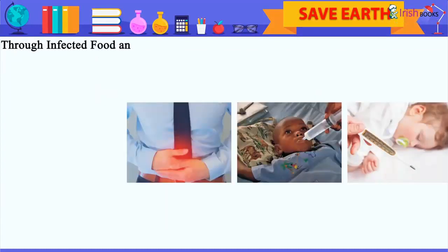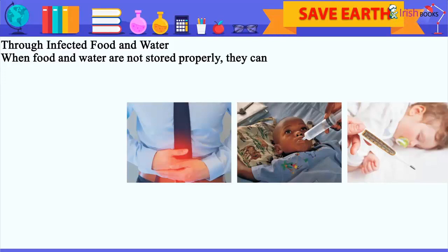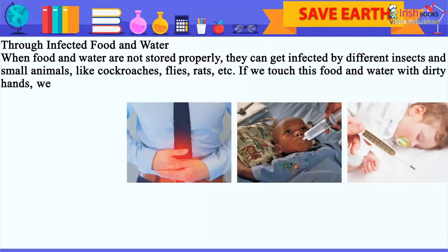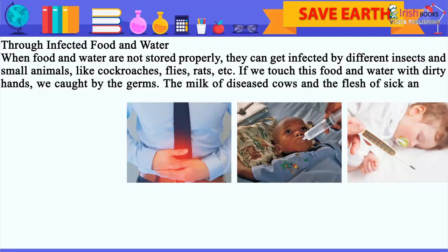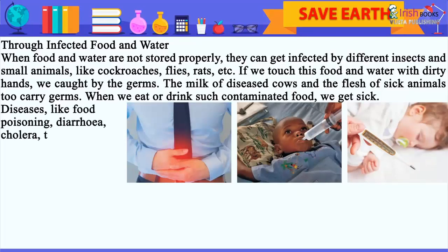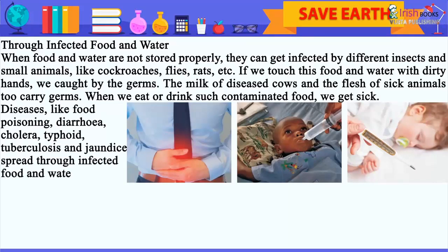Through infected food and water: When food and water are not stored properly, they can get infected by different insects and small animals like cockroaches, flies, rats, etc. If we touch this food and water with dirty hands, we get caught by the germs. The milk of diseased cows and the flesh of sick animals also carry germs. When we eat or drink such contaminated food, we get sick. Diseases like food poisoning, diarrhea, cholera, typhoid, tuberculosis and jaundice spread through infected food and water.